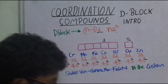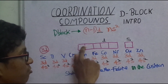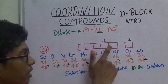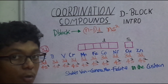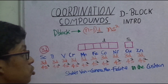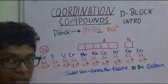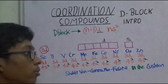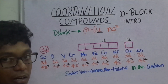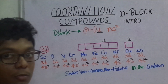Now, how do you explain this? The D shell has 5 boxes: 1, 2, 3, 4, 5. In each box, you can fill 2 electrons. So overall, you can fill 10 electrons in D. And S can hold 2 electrons.